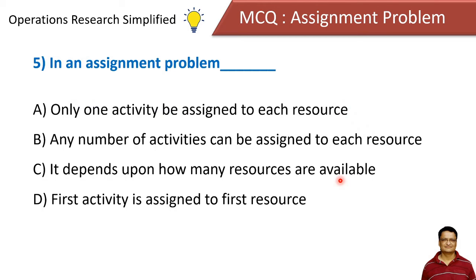In an assignment problem: only one activity can be assigned to each resource, any number of activities can be assigned to each resource, it depends on how many resources are available, or the first activity is assigned to the first resource. Obviously the answer is that only one activity can be assigned to each resource.